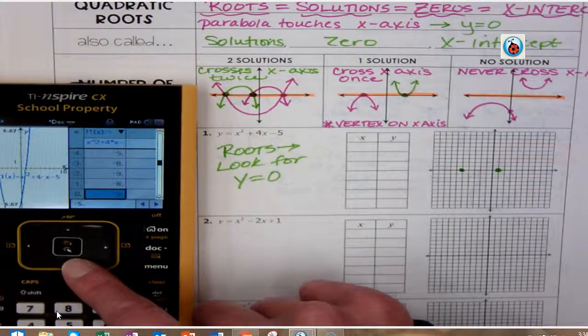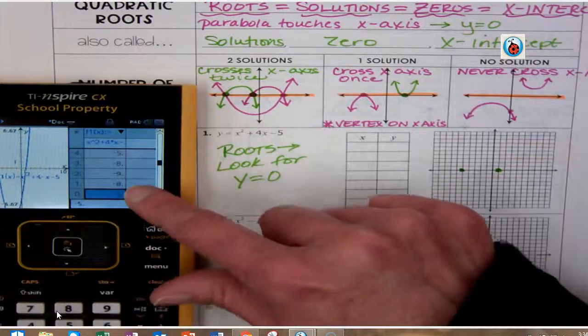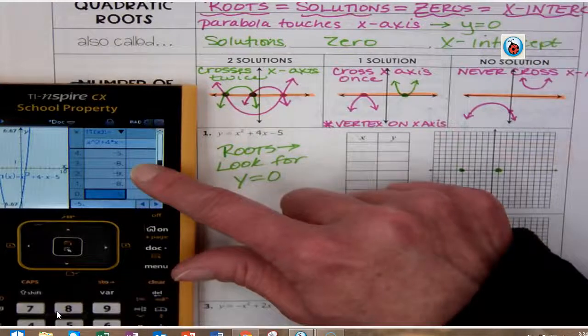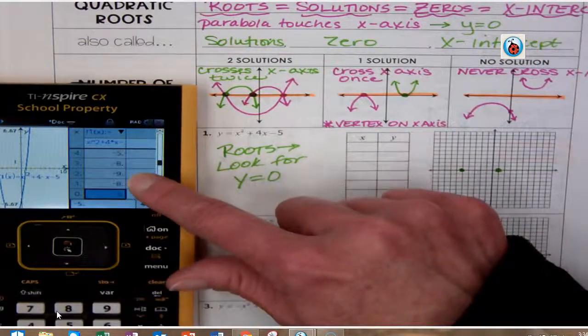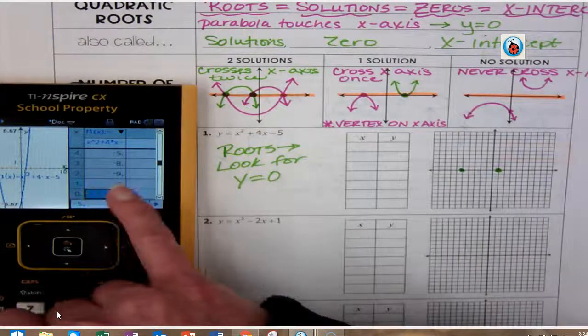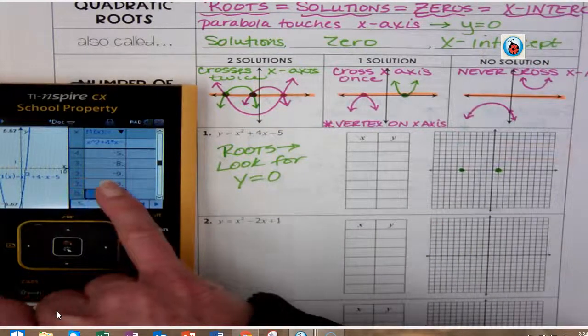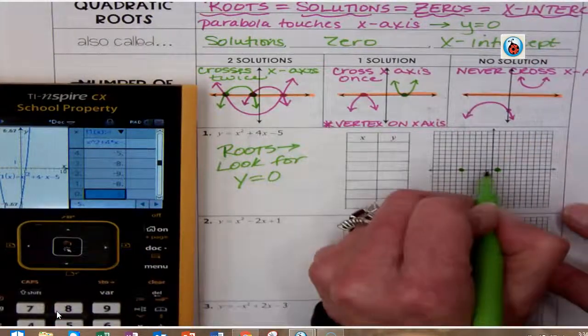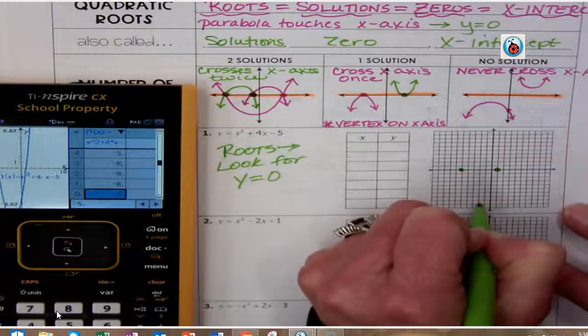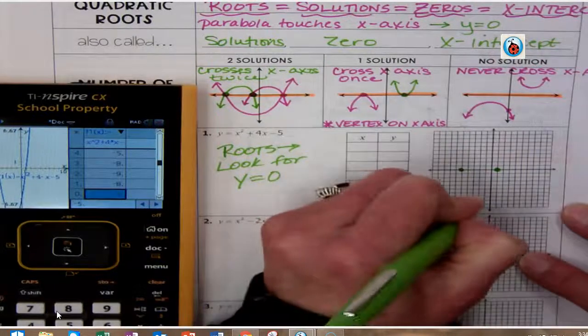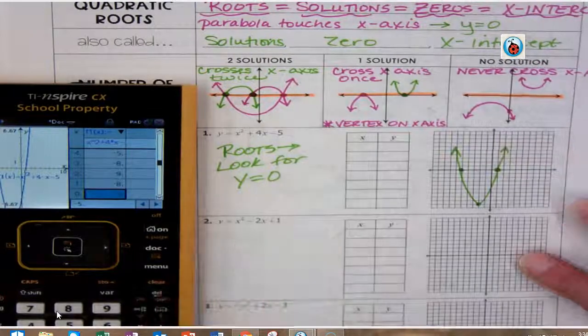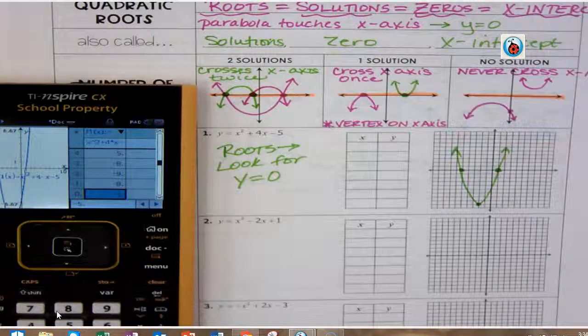So it goes negative 5—I'm looking at the y value now—negative 5, negative 8, negative 9... So right here at negative 2, negative 9 would be my vertex. And I can graph that and fill in my table accordingly.